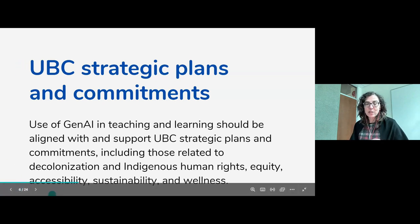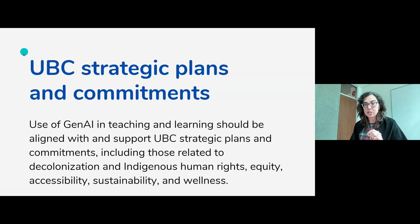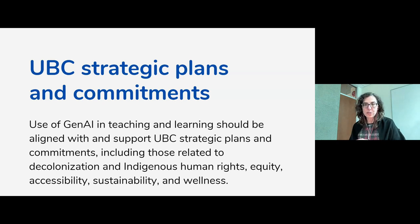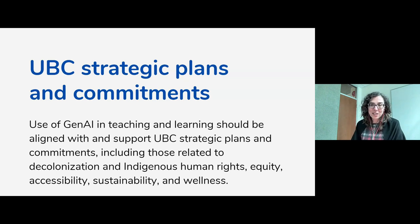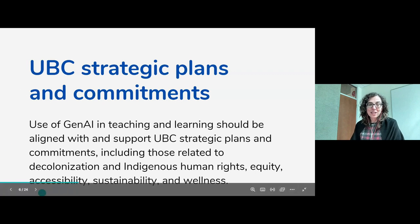As I reflect on what we have so far, our guidelines focus on equity, accessibility, and decolonization and Indigenous human rights. We don't have as much on sustainability, in part because the broader principles from the steering committee already state that UBC is committed to sustainability, generative AI tools use significant amounts of electricity, and users should consider choosing solutions or vendors that limit or reduce power consumption and leverage high-quality renewable energy. Wellness is also something that would be useful to think about further.